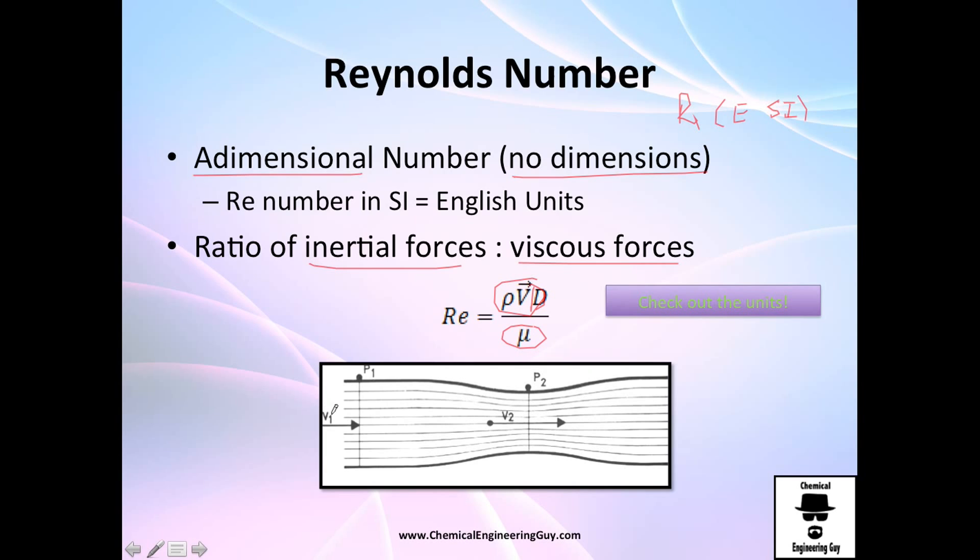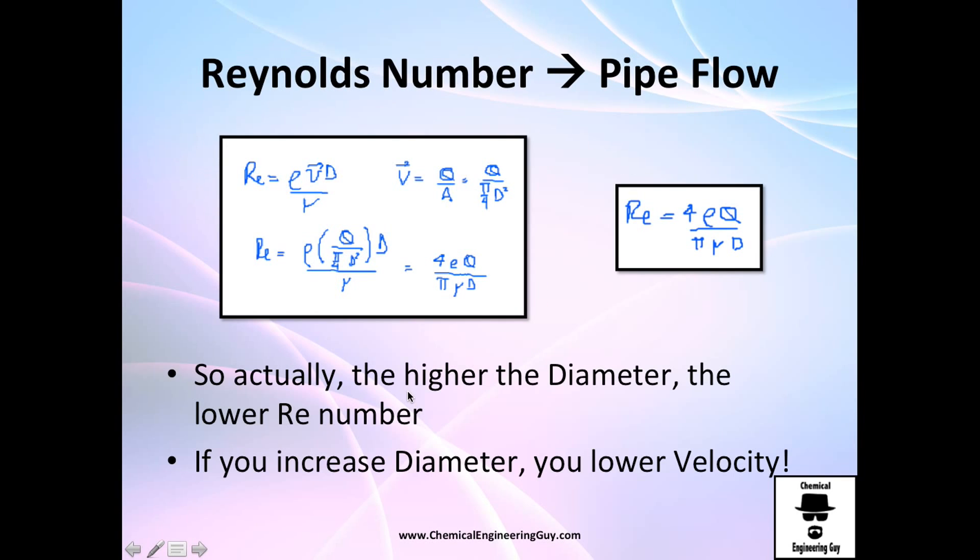You will have a Reynolds number here and another Reynolds number right here because you have different velocities and different diameters. Since we use pipes, the pipe area flow will be defined as area equals π divided by 4 times diameter squared.